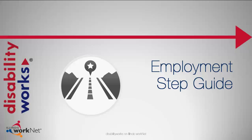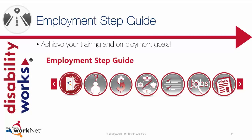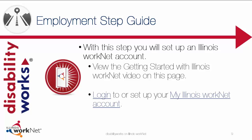The first section we will show you is the Employment Step Guide. The Employment Step Guide is a series of pages in a step format to help you achieve your training and employment goals. In the first step, you will be able to view a Getting Started with Illinois WorkNet video. To make the best use of the Employment Step Guide, we advise you to log in to your Illinois WorkNet account. If you already have one, you can follow the link that says Log In and Get Started. If you don't have an account, you can easily set one up by clicking on the link that says My Illinois WorkNet Account.